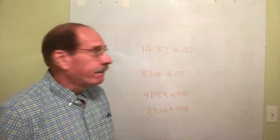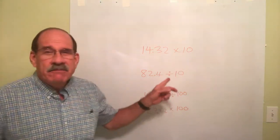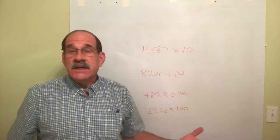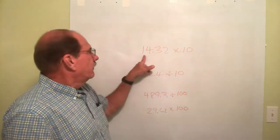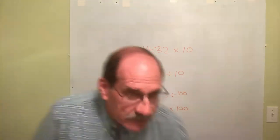Let me speak real quickly about multiplying and dividing by numbers like 10 or 100 or 1,000. Okay, 14.32 times 10.